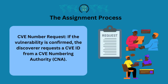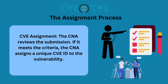If the vulnerability is confirmed, the discoverer requests a CVE ID from a CVE Numbering Authority (CNA). The CNA reviews the submission, and if it meets the criteria, assigns a unique CVE ID to the vulnerability.